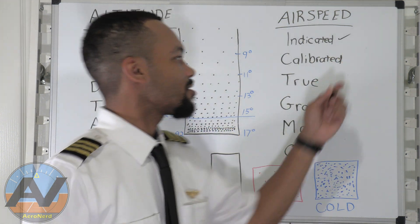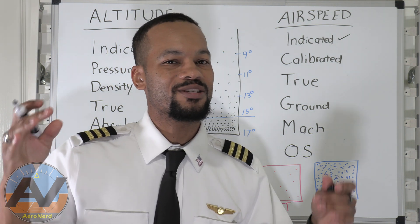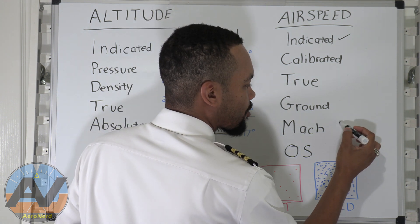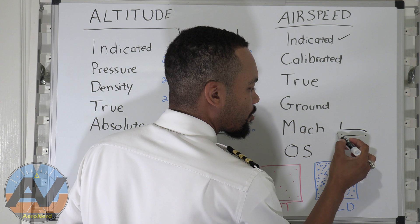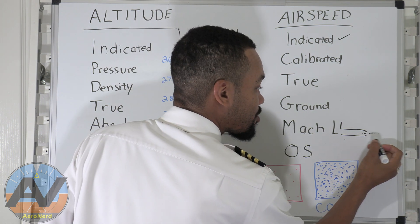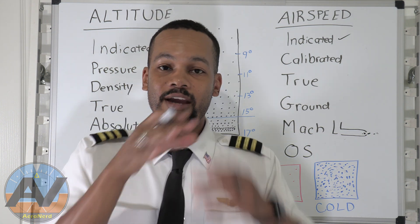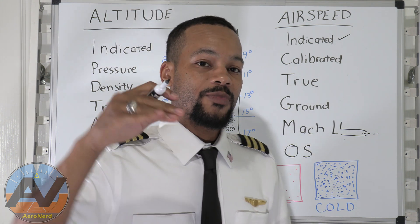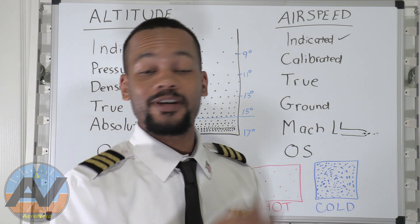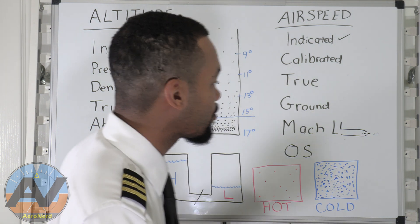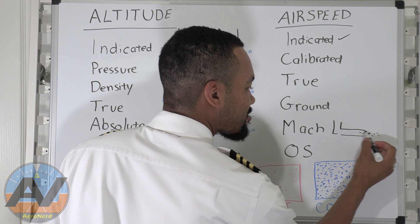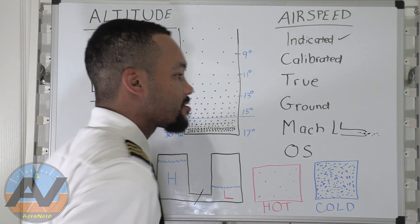Now, calibrated — for Cessnas and slower aircraft, the calibrated and indicated don't really have that much difference because we don't go fast enough for a significant difference. So let's say we're going 90 knots. I'll draw a pitot tube. We're going through the air at 90 knots, so it's going to indicate 90 knots by having 90 knots worth of air molecules being shoved in there, expanding the aneroid wafer inside the airspeed indicator.